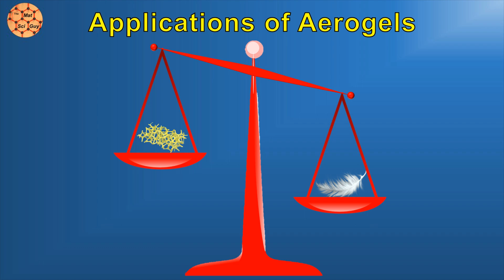A silica aerogel in a vacuum has a density of around 1,000 grams per meter cubed, literally lighter than air.